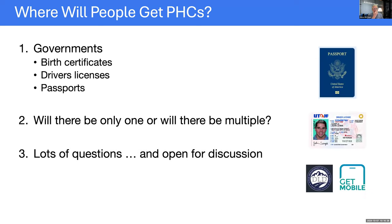Where will people get personhood credentials? At this point it really looks like governments. Birth certificates are a very likely case — when someone's born, they get their first credential, which will probably sit in the custody of their parents until they're old enough to use it. They may also come in the form of driver's licenses or passports. A question raised in the paper is whether there will be only one credential or multiple.